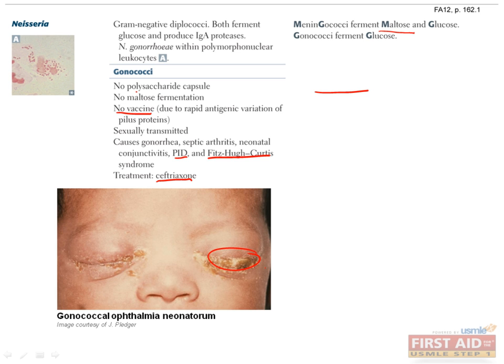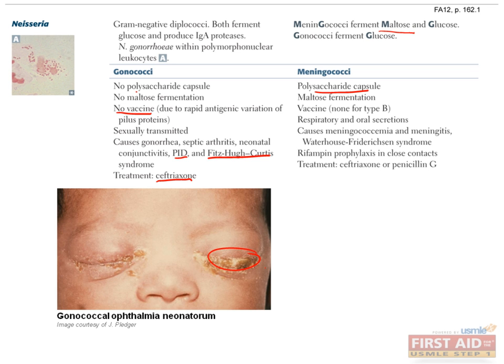Now let's talk about Neisseria meningitidis. This organism is responsible for causing bacterial meningitis in adolescents and populations within close quarters, such as military recruits or college dormitory residents. Meningitis is inflammation of the meninges, the membranes which cover and protect the brain and spinal cord. Symptoms include abrupt onset of headache, fever, chills, neck stiffness, nausea, vomiting, and photophobia.